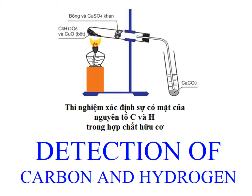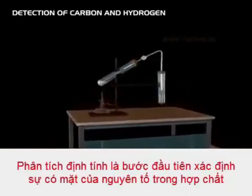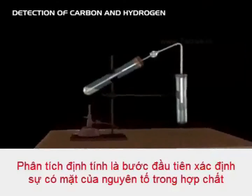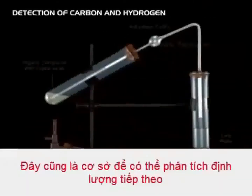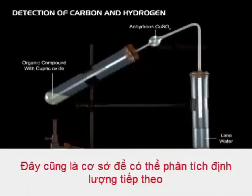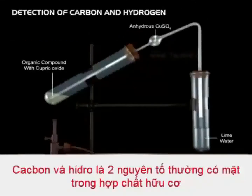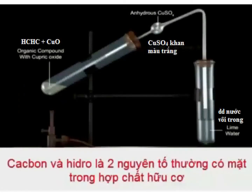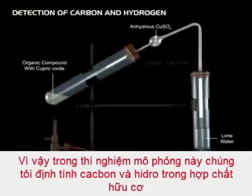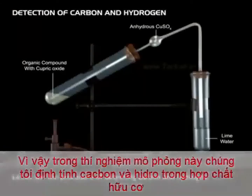Detection of Carbon and Hydrogen. The analysis of an organic compound is the first step to find the elements present in it qualitatively. The detection of various elements present in an organic compound is called qualitative analysis. Carbon and hydrogen are present in almost all organic compounds. Let us see the procedure of detecting Carbon and Hydrogen.